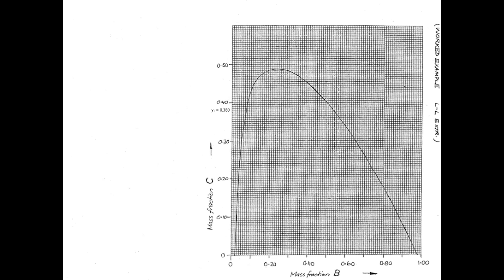On our equilibrium diagram, we can locate the first point, V_{N+1}. In this example, our solvent is pure, so it has a concentration of 0. We can locate the point L₀, which is 0.3, and draw the line joining the two. We solved for Z_M equals 0.223, and we can locate on that line the mixture point M using that value.